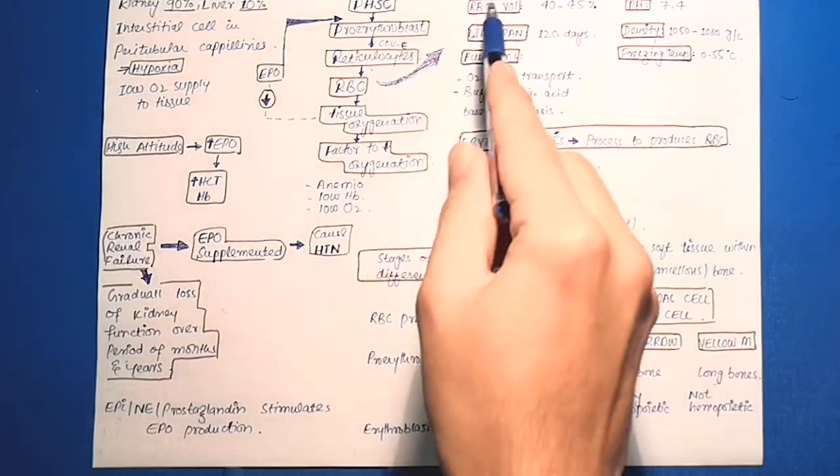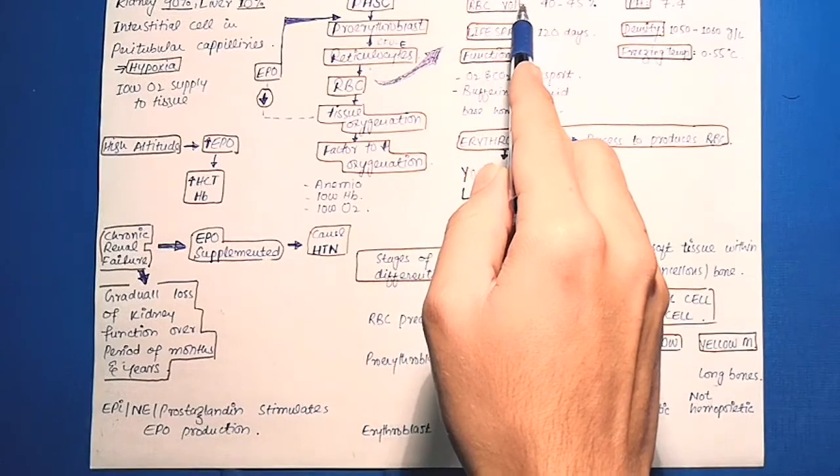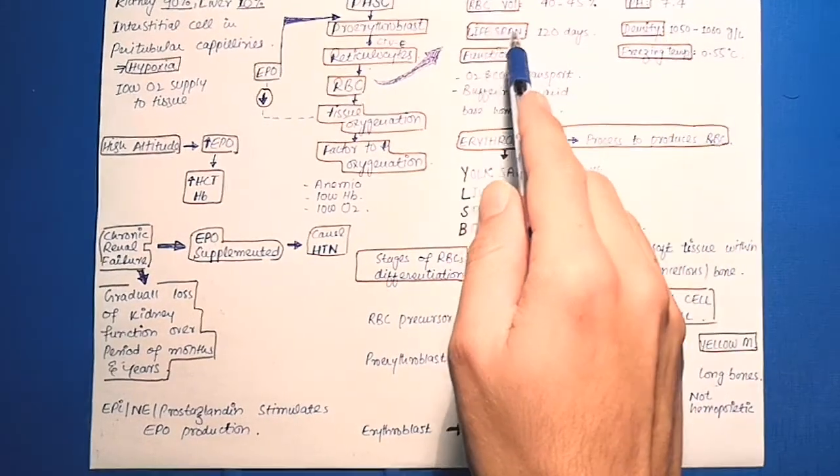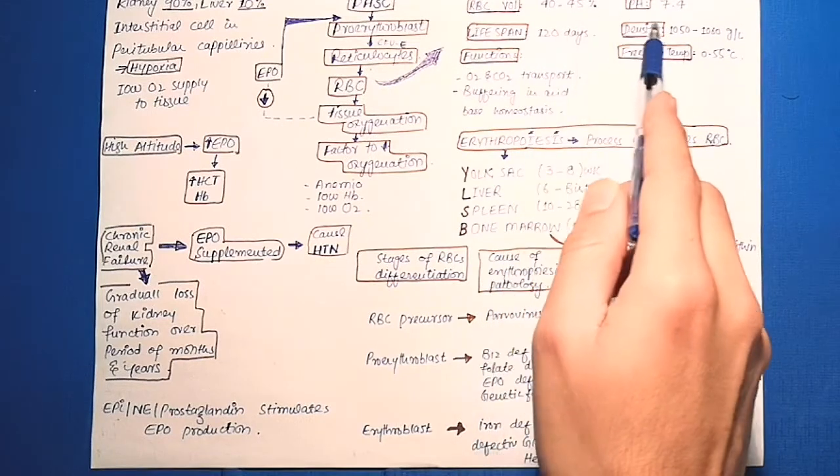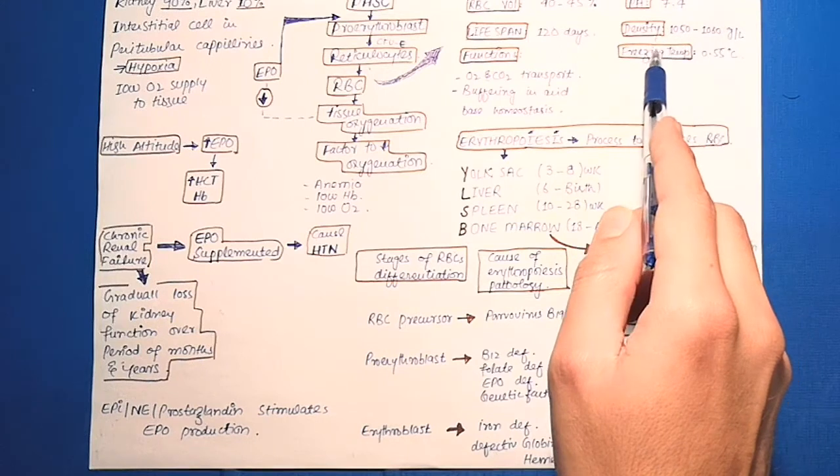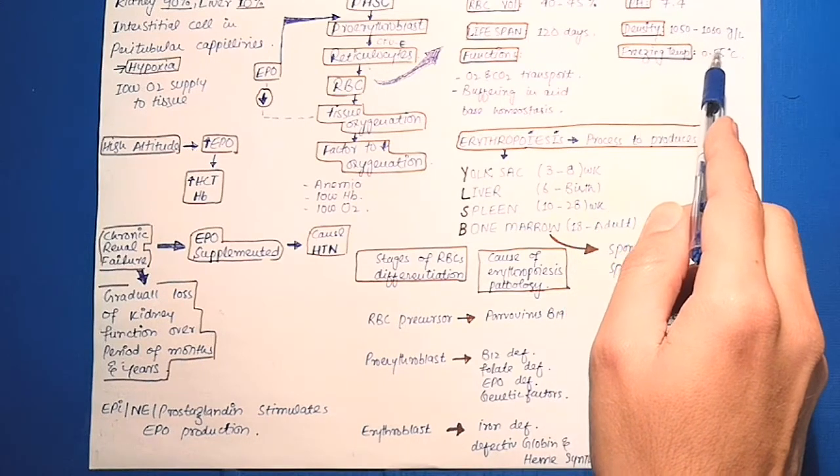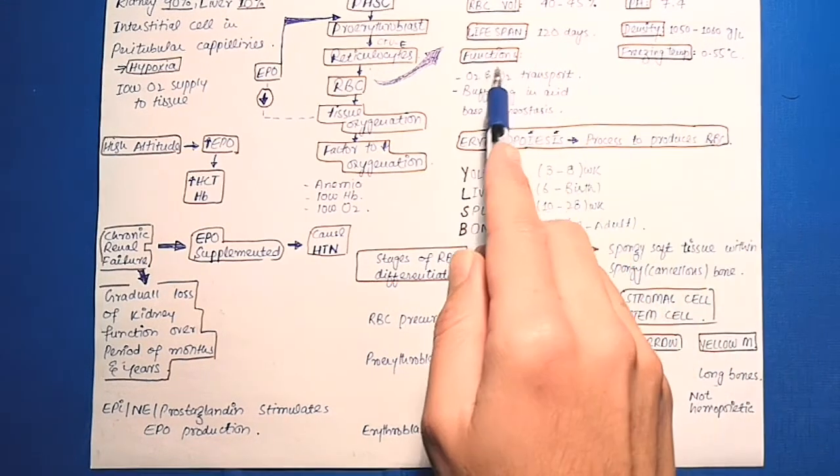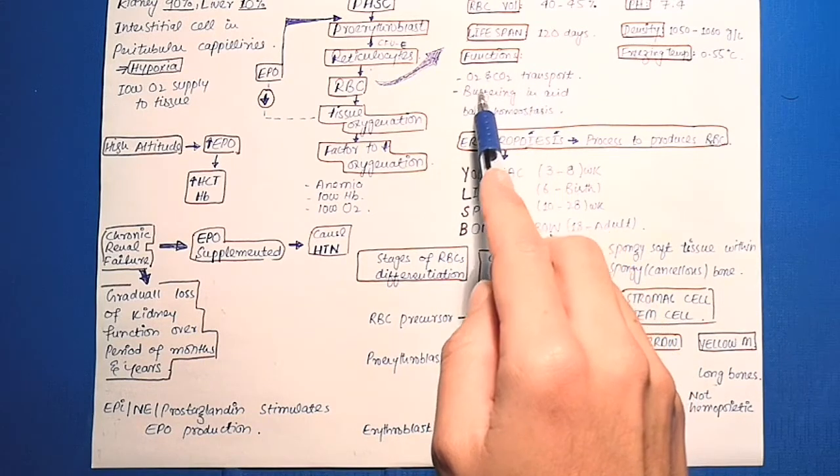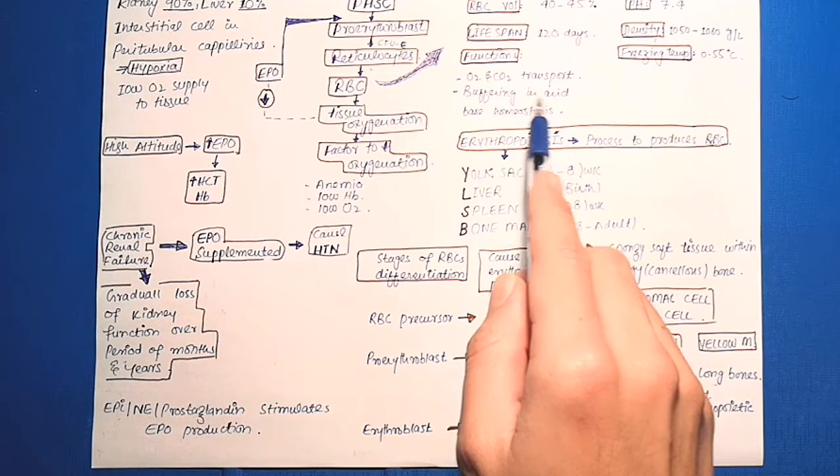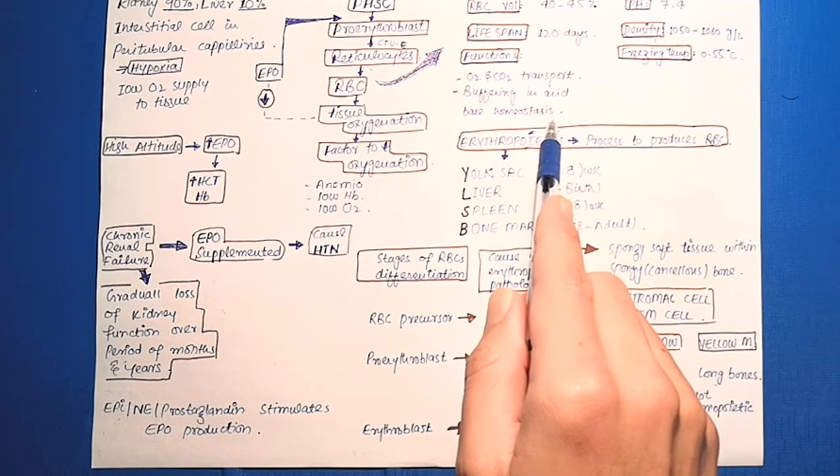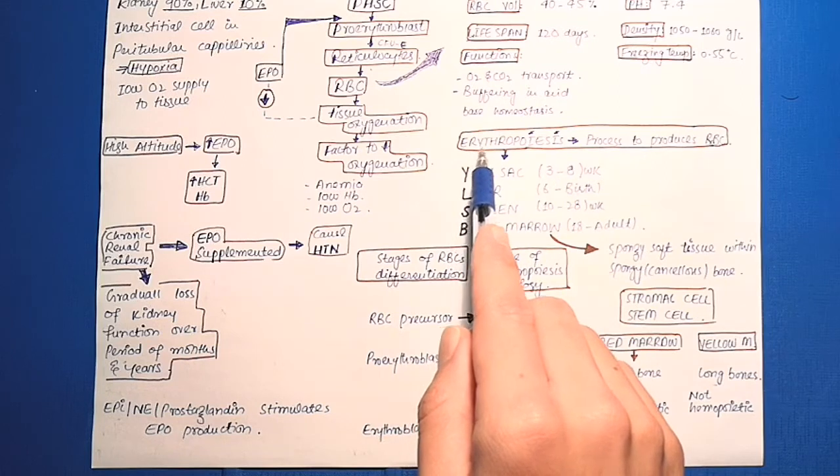Red blood cell volume is 40 to 45%, pH is 7.4, their lifespan is about 120 days, density is 1050 to 1060 grams per liter, and the freezing temperature is 0.55 degrees centigrade. The function is to transport oxygen and carbon dioxide, and they are buffering in acid-base homeostasis. The process to produce the red blood cell is called erythropoiesis.